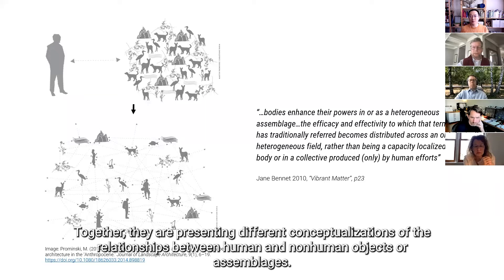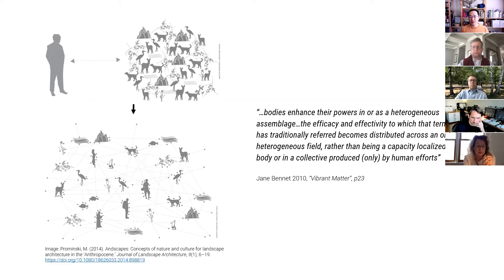And many of these post-human ideas are gaining their currency in intellectual life. And for example, actor network theory was originated from the field of social construction of technology and now has been imported into other disciplines, including landscape design. And together, all of these post-human ideas presenting different conceptualizations of the relationship between human and non-human objects or assemblages. And here I quote Jane Bennett, a widely read author in Landscape. And she says, bodies enhance their power in or as a heterogeneous assemblage and efficacy and effectivity to which that term agency has traditionally referred becomes distributed across ontologically heterogeneous field rather than being a capacity localized in a human body or in a collective produced only by human efforts.